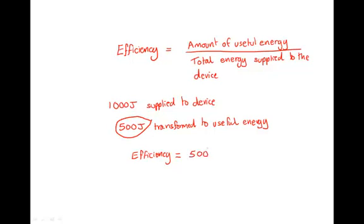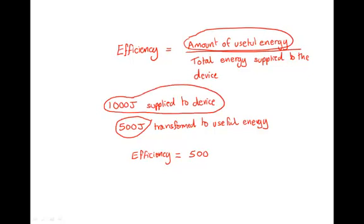So we can put that on the top part of our equation there. This is it, the amount of useful energy. Now we need the total energy supplied to the device, which in this case is 1,000 joules. So we'll need to divide our 500 by 1,000. And if we did that on our calculator, we would find that it was 0.5 would be the efficiency.